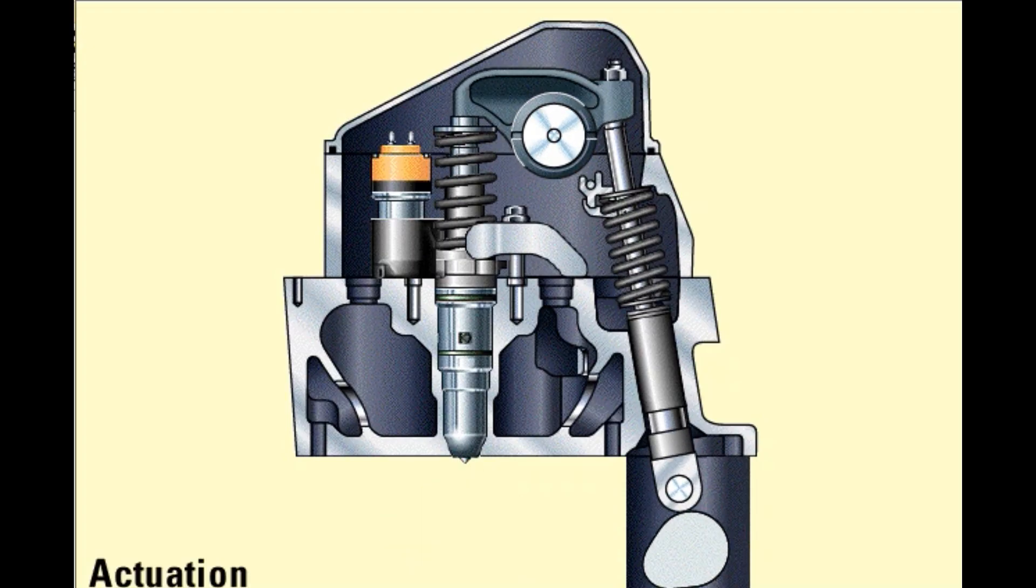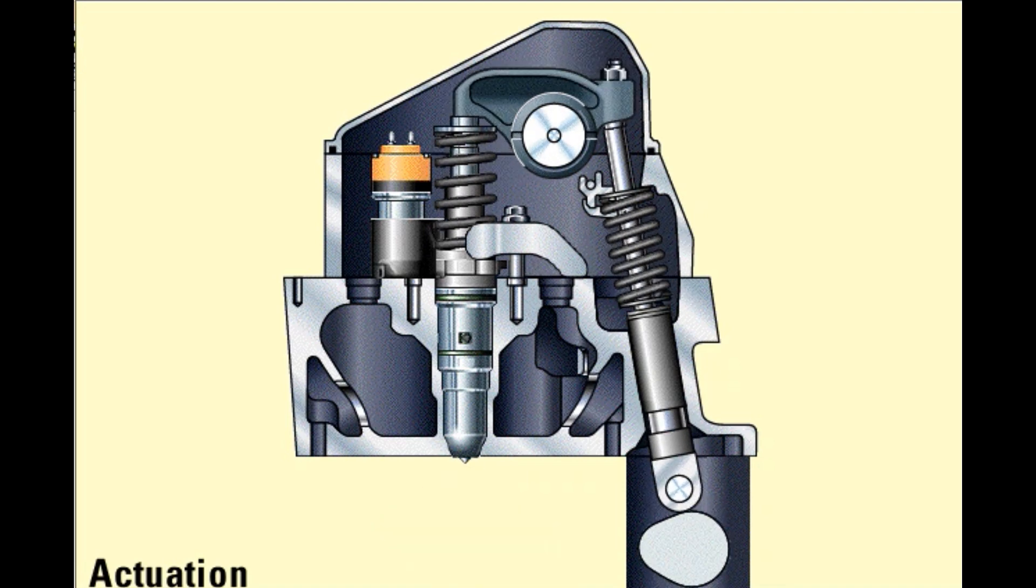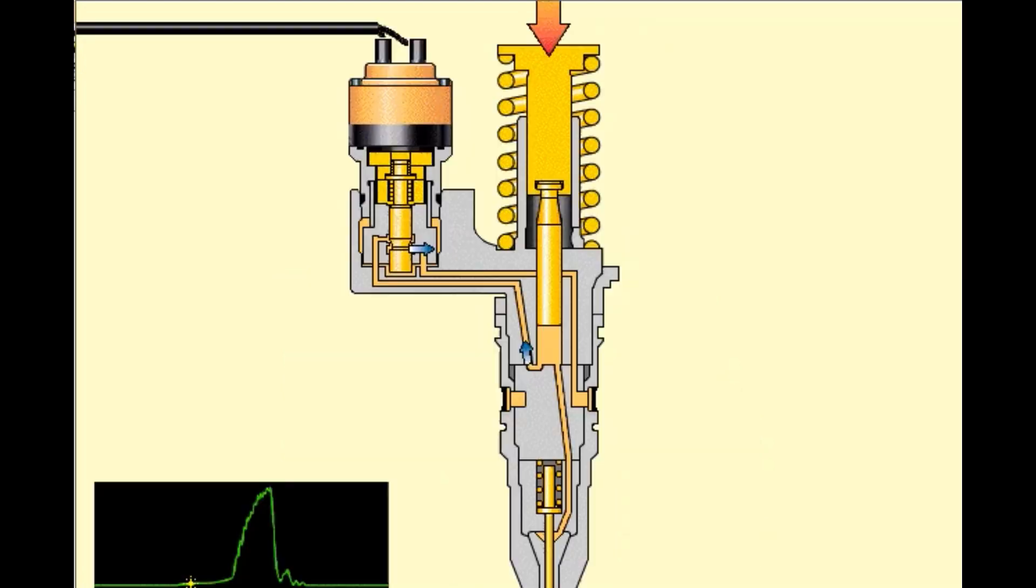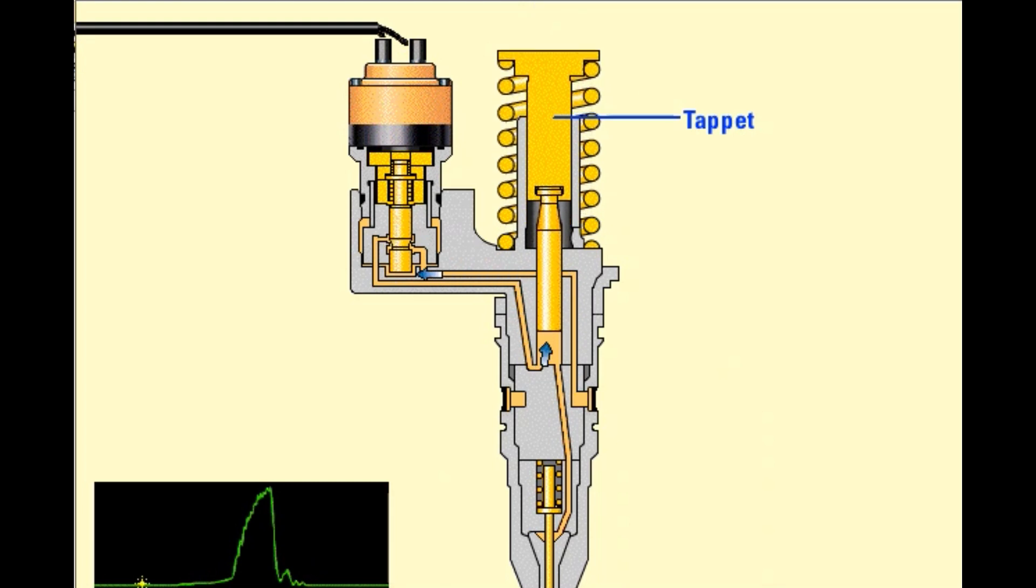Actuation refers to the type of force used to power the plunger which pumps the fuel out of the injector. Mechanically actuated fuel systems use a camshaft lobe and rocker arm to provide that force. The rocker arm presses down on the tappet at the top of the injector.